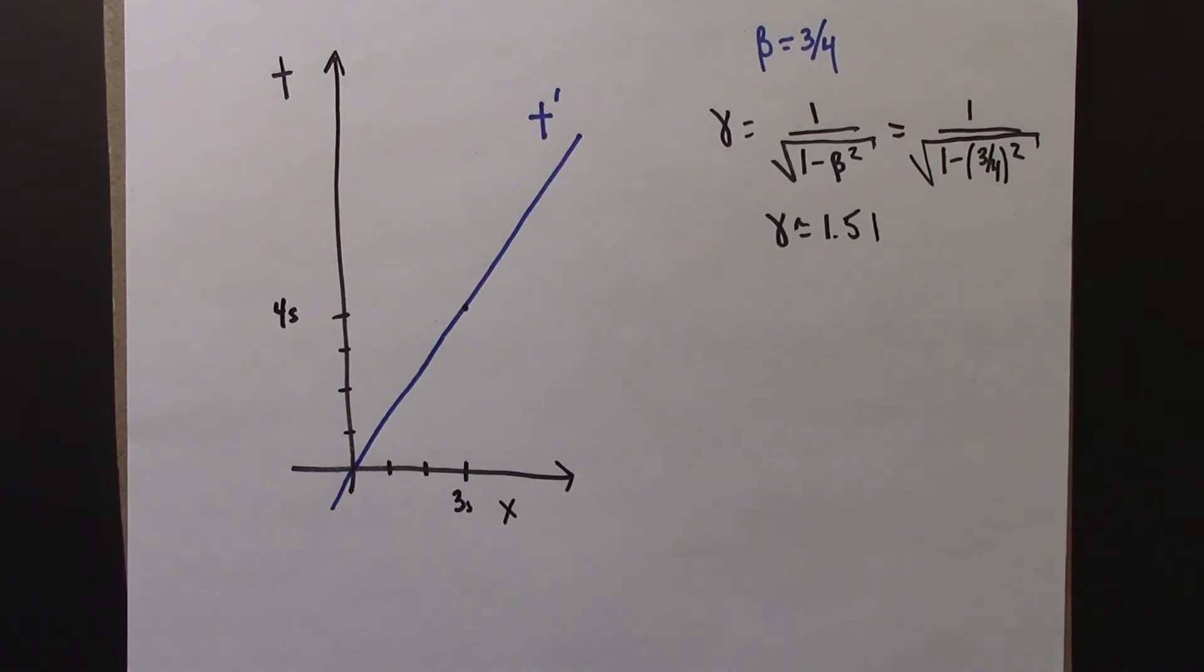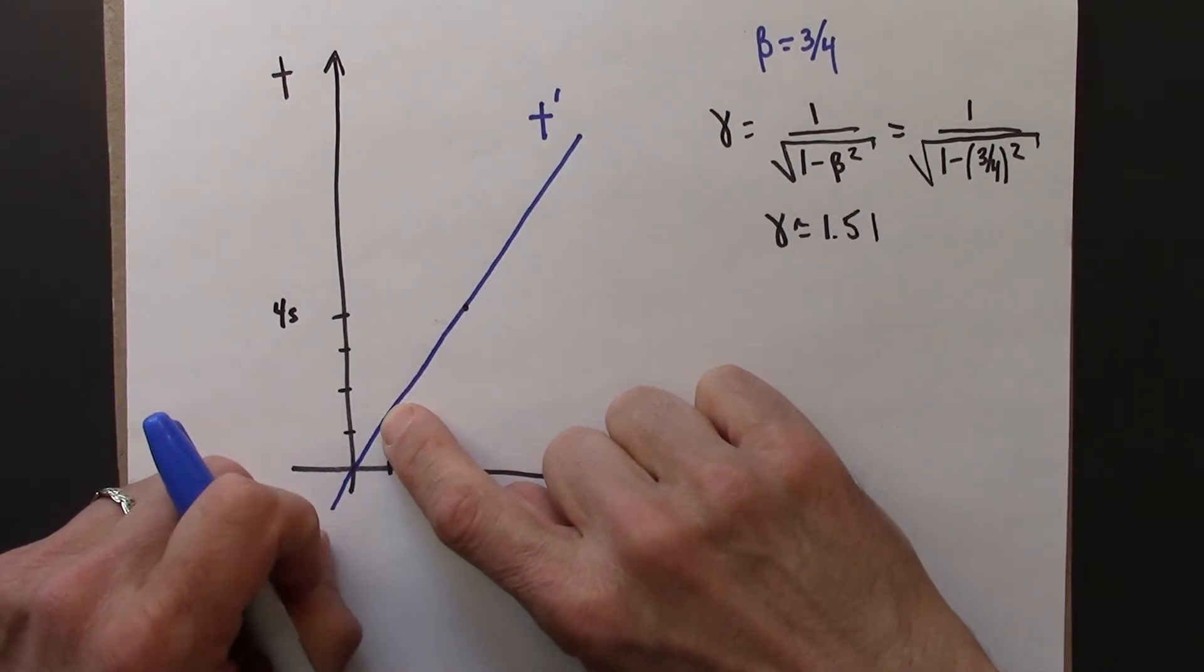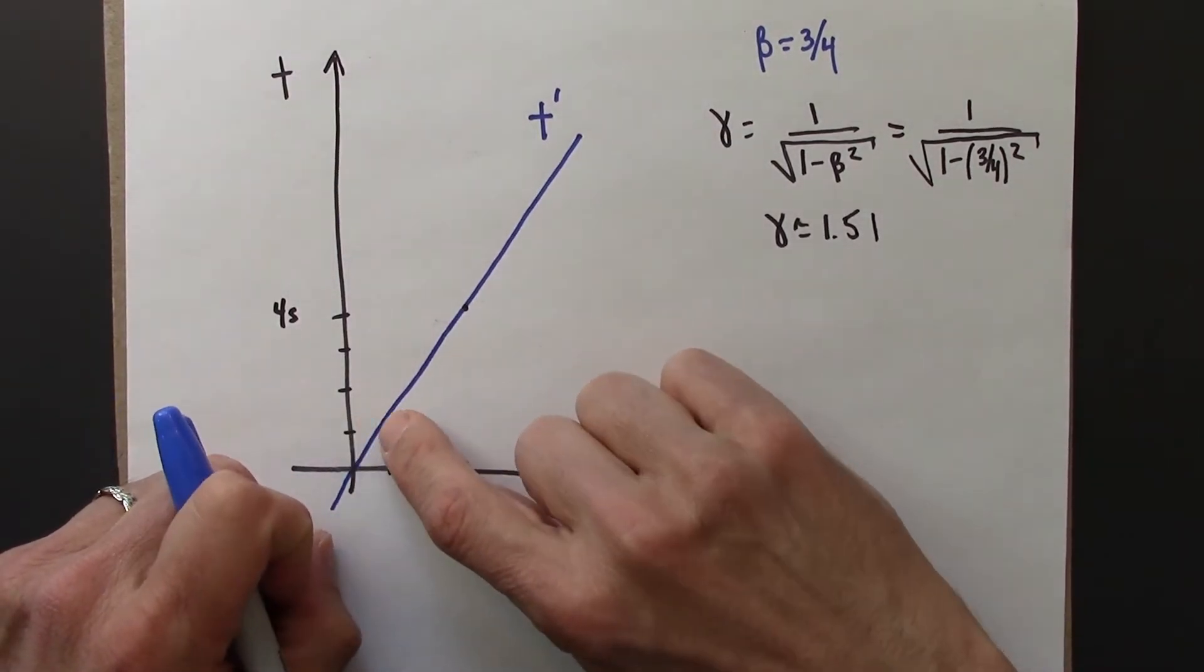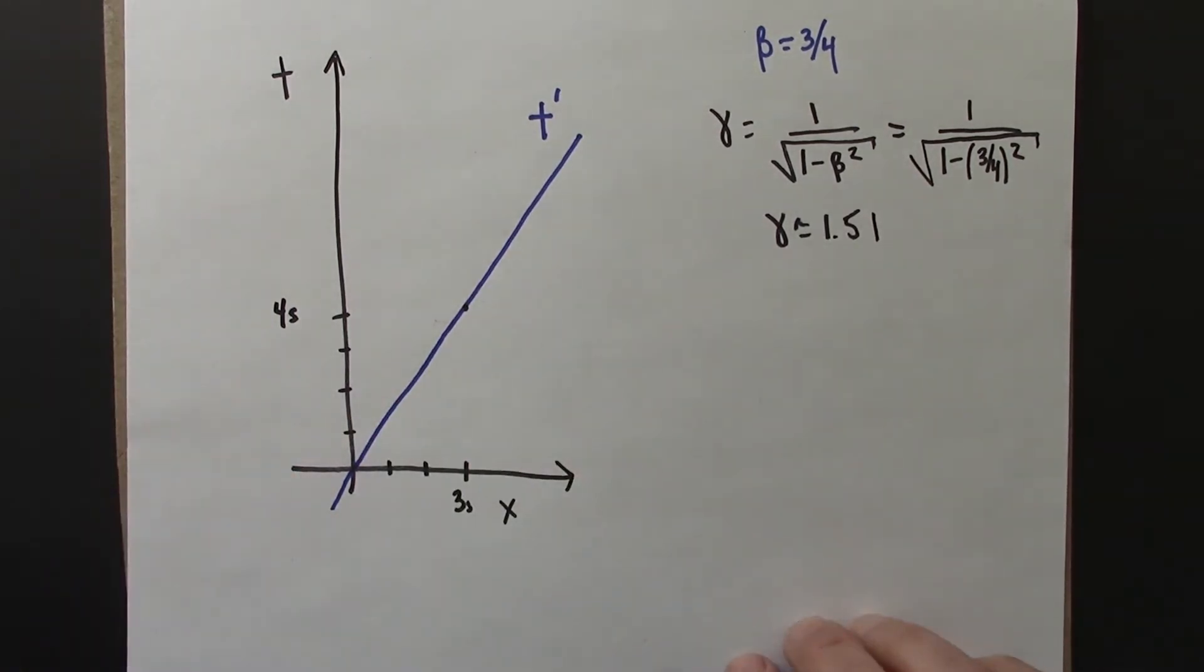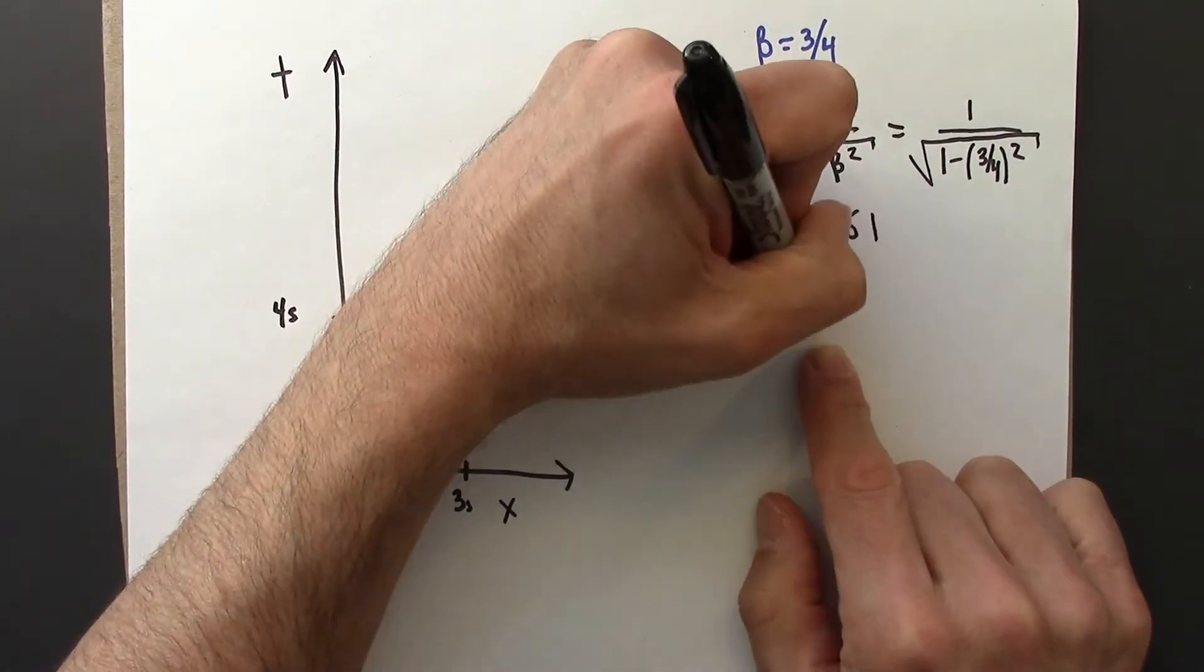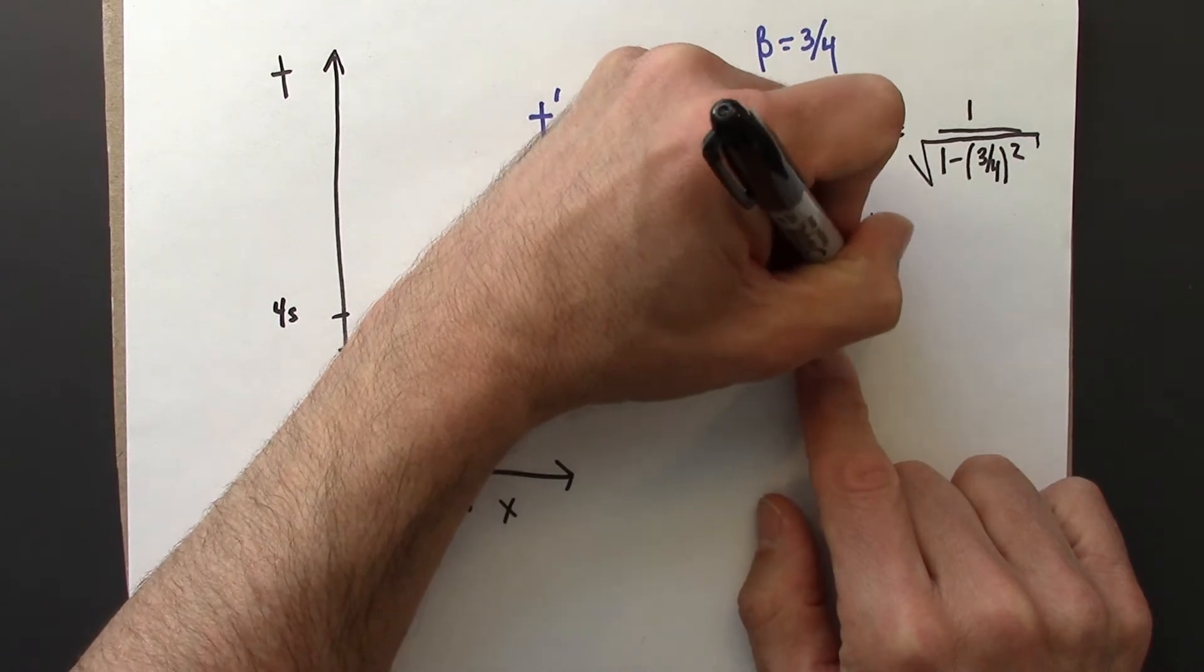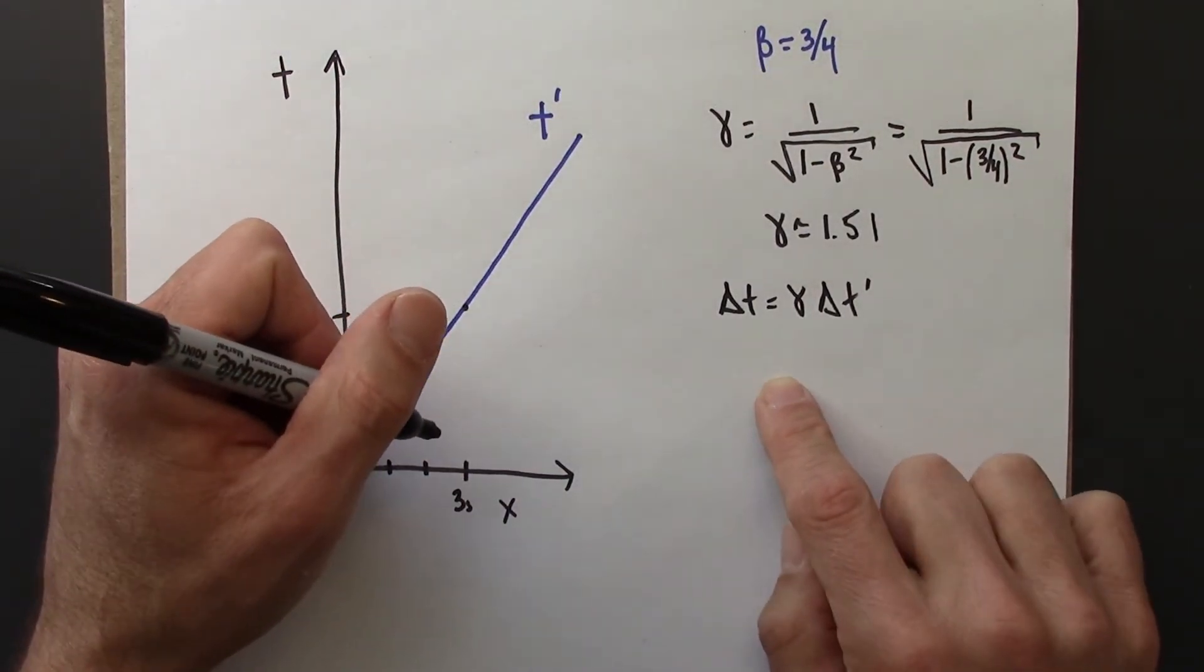Alright, so when Beowulf says it's 1 second, what does Anna think it is? When it's 1 second on the t prime axis, what is it on the t axis? So we'll use the result that delta t is gamma delta t prime.